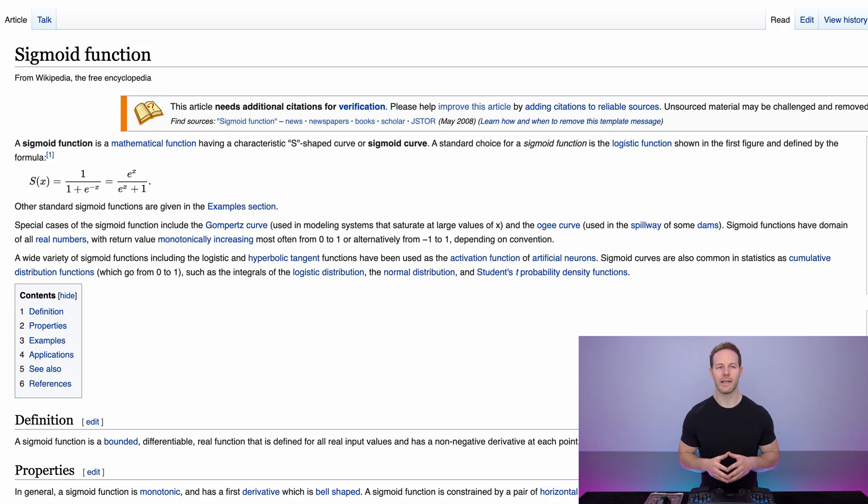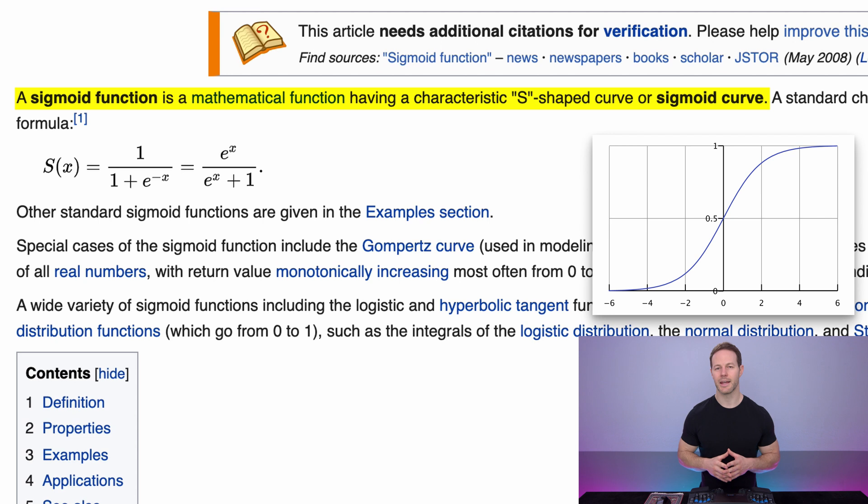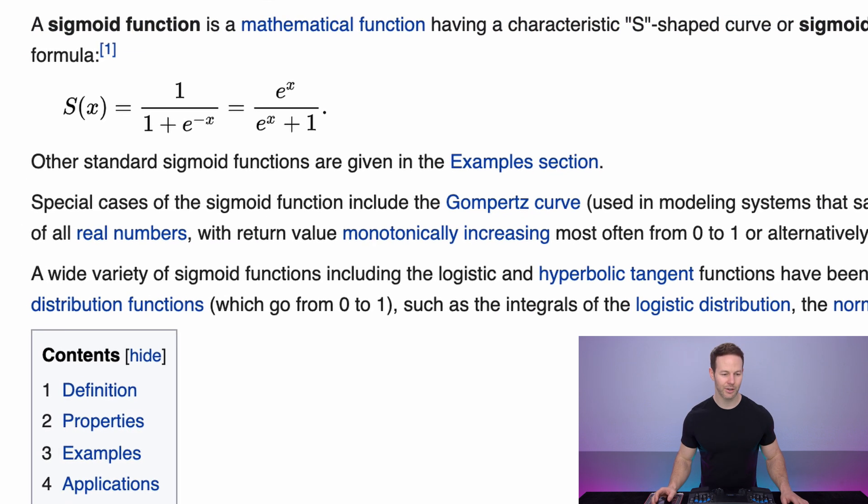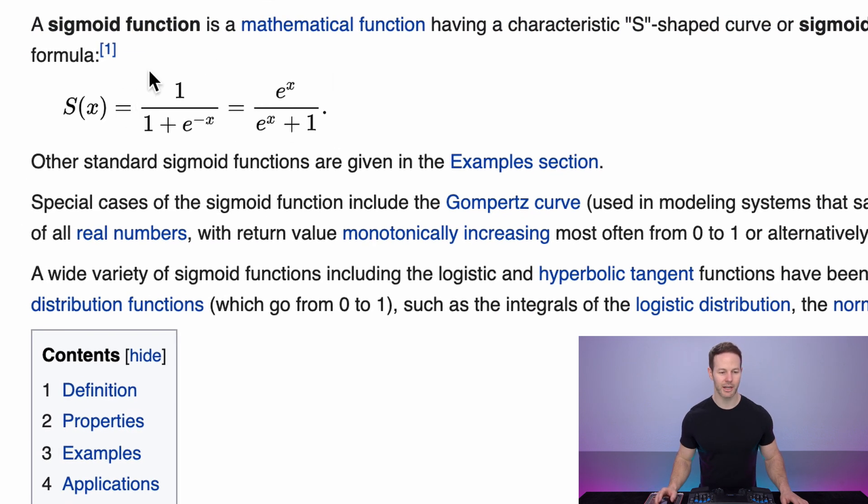So first, what is the sigmoid function? Well really a sigmoid function is just a mathematical function that has this type of S-shaped curve. But in machine learning when we say the sigmoid function, what we're really talking about is this equation here. It's usually expressed in these two forms, they're equivalent, you can convert from one to the other just by multiplying the numerator and denominator by e to the x.